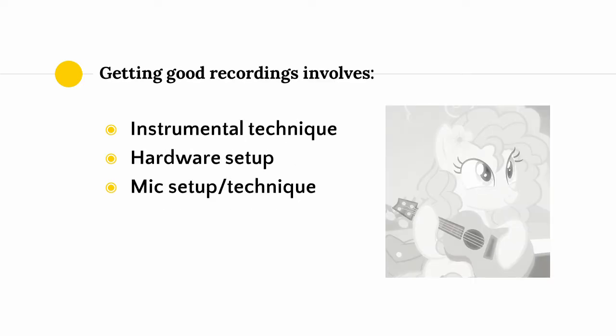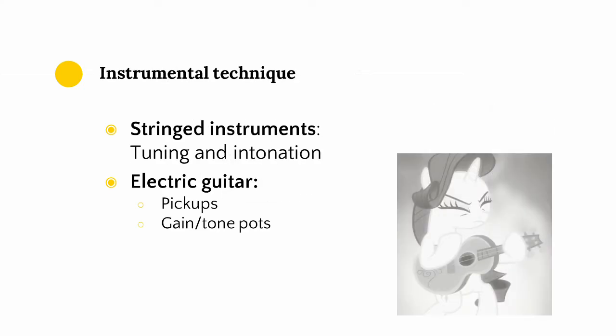I view getting recordings as involving three factors: instrumental technique, having a proper hardware setup, and having good mic setup and technique. Starting with instrumental technique — if you are recording instruments, there are some things you can do that will alter the quality of your sound, which vary from instrument to instrument. For stringed instruments in general, you want to make sure your instrument is in tune. Ideally, not only is your instrument in tune, but it should have good intonation — meaning your instrument stays in tune up and down the keyboard or fretboard. No matter how high or how low you play, your notes should be in tune. This can be a problem with cheaper instruments or instruments that are poorly set up.